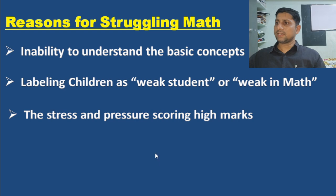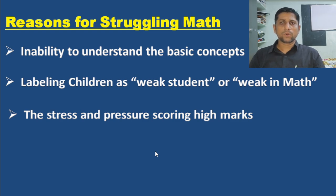Reason number three: the stress and pressure of scoring high marks. If a child scores low, it is not entirely his or her fault. There are many factors that can affect a child's grasp of maths. Good marks may be the consequence of fundamental understanding, but fundamental understanding will not come as a consequence of good marks.